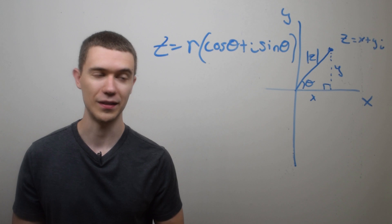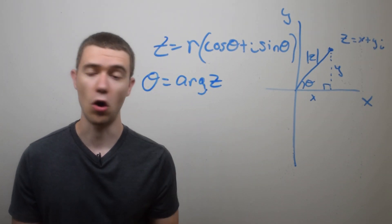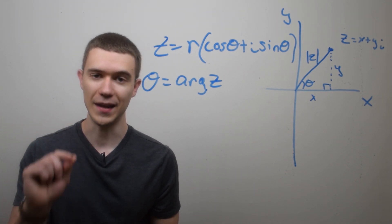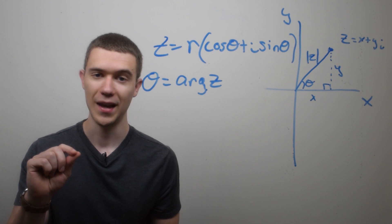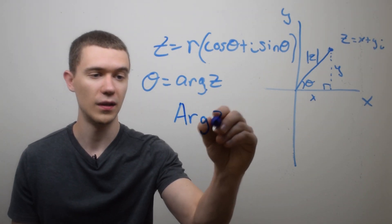This angle is called the argument. And it's denoted like this, arg z. Now, if you do want one distinct angle, we call that the principal argument.